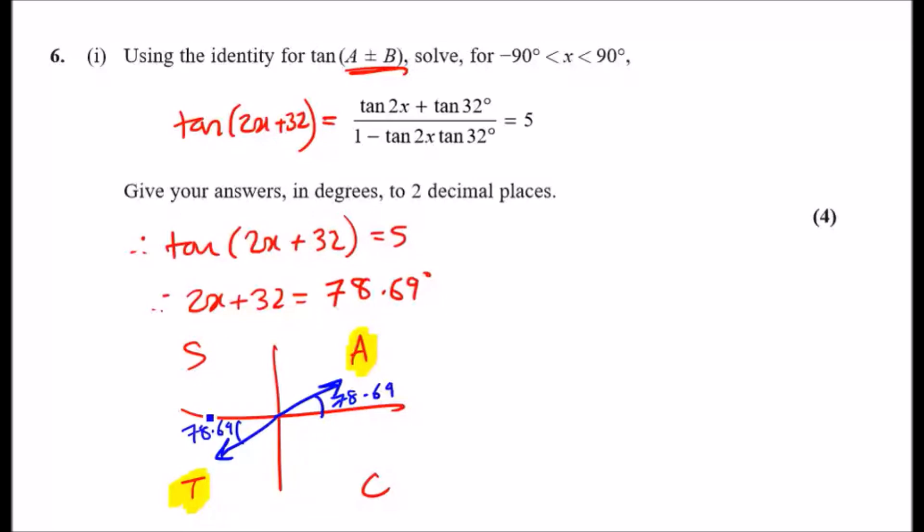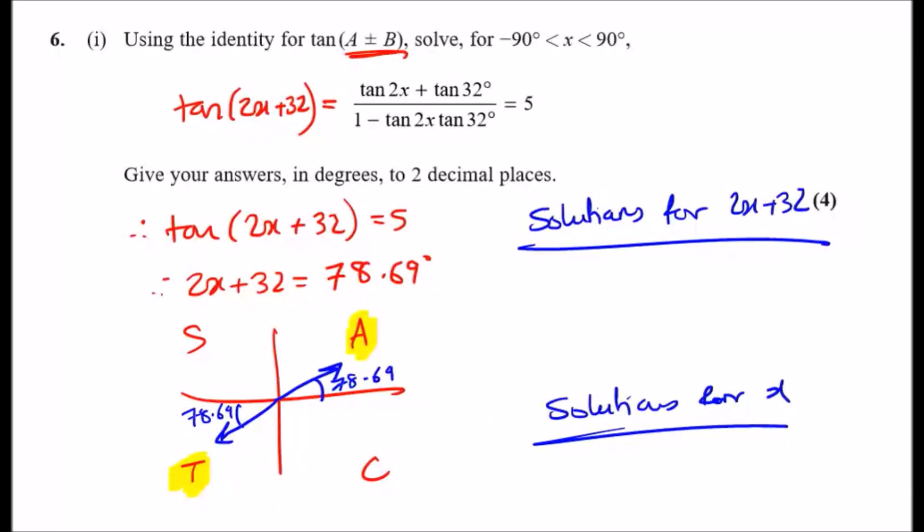The key idea is to obtain as many solutions for the equation 2x + 32. We're going to have a bunch of them, and once we do, we'll write down all the solutions for simply x. We've got a range between -90° to 90°. Because we're working with 2x plus something, imagine this range doubled to -180° to +180°.